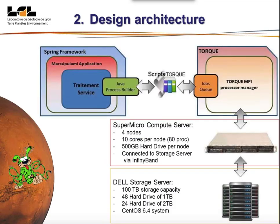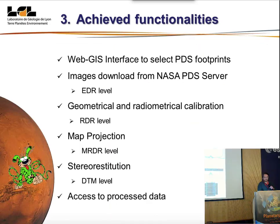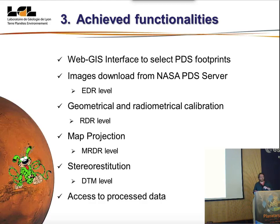We have a compute server with four nodes and 100 terabytes of storage capacity. The functionalities implemented include a web interface to select PDS footprints and download them to our server, make automatic calibration for RDR level, then map projection, automatic stereo restitution, and finally access to the processed data.